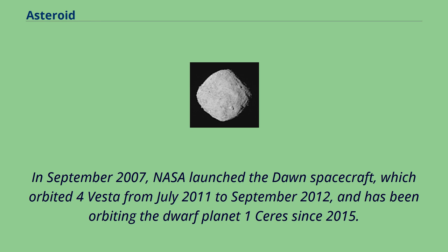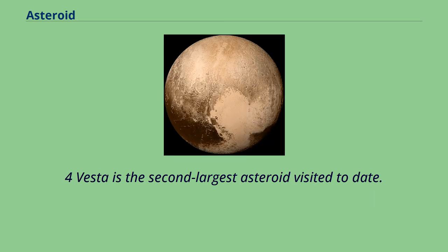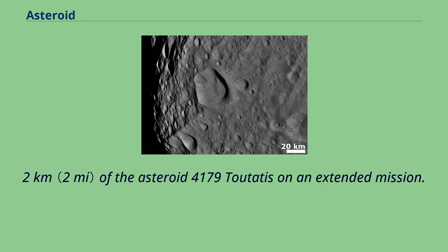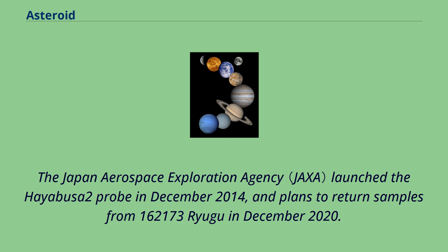In September 2007, NASA launched the Dawn spacecraft, which orbited 4 Vesta from July 2011 to September 2012, and has been orbiting the dwarf planet Ceres since 2015. 4 Vesta is the second-largest asteroid visited to date. On December 13, 2012, China's lunar orbiter Chang'e-2 flew within 3.2 kilometers of the asteroid 4179 Toutatis on an extended mission. The Japan Aerospace Exploration Agency launched the Hayabusa-2 probe in December 2014, and planned to return samples from 162173 Ryugu in December 2020.